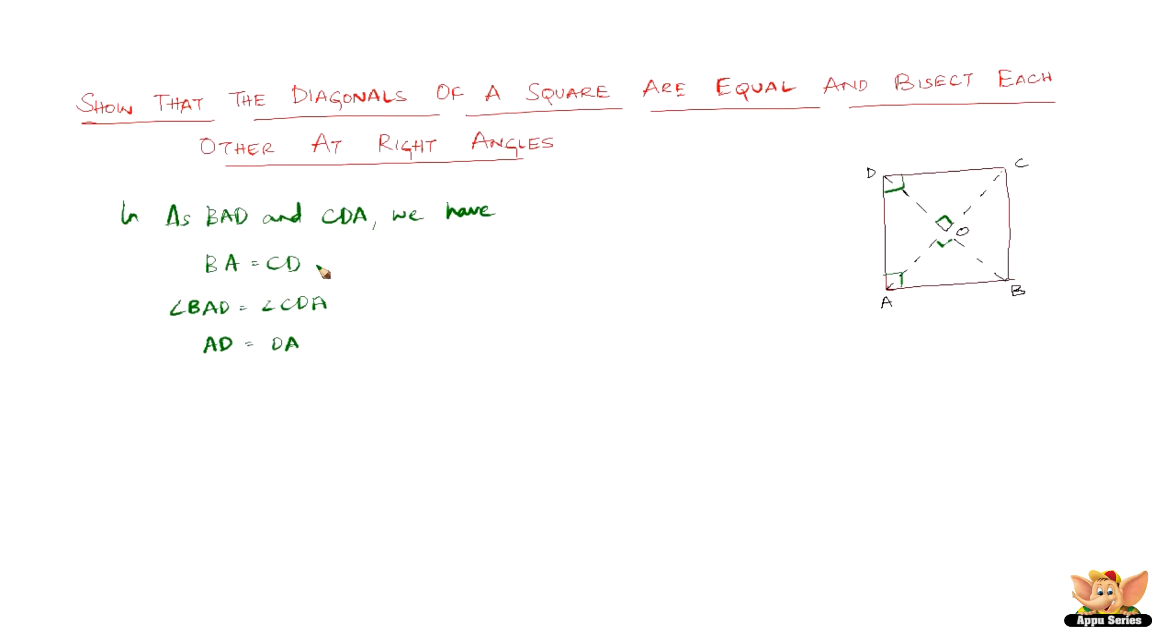So now by SAS congruence that is side angle side congruence, we can prove that triangle BAD is congruent to triangle CDA. And therefore we can say that BD equal to CA.